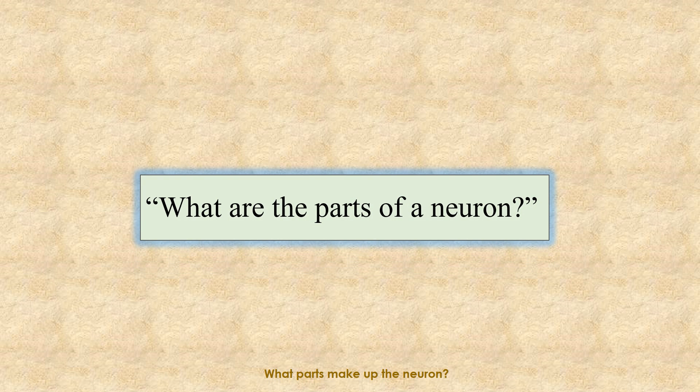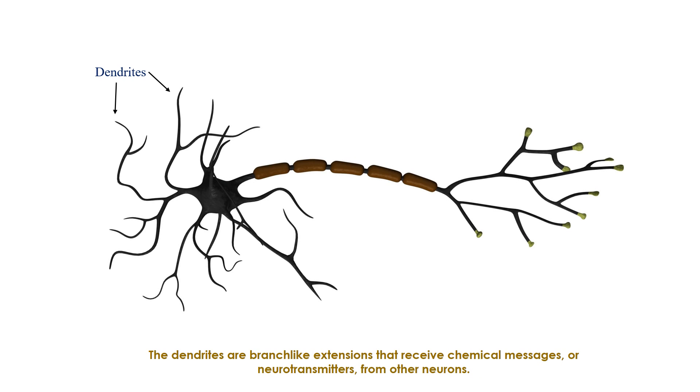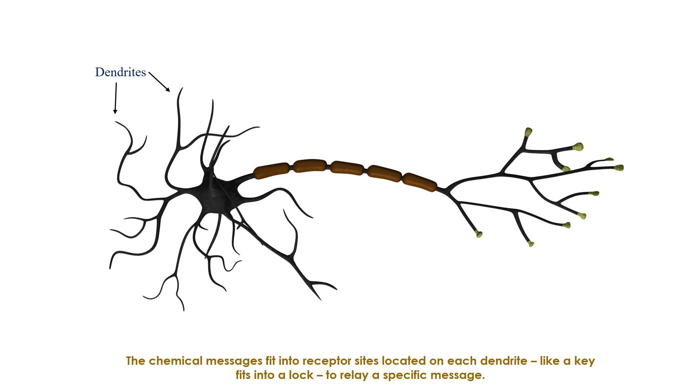What parts make up the neuron? Each individual neuron is made up of different parts. The dendrites are branch-like extensions that receive chemical messages or neurotransmitters from other neurons. The chemical messages fit into receptor sites located on each dendrite, like a key fits into a lock to relay a specific message.